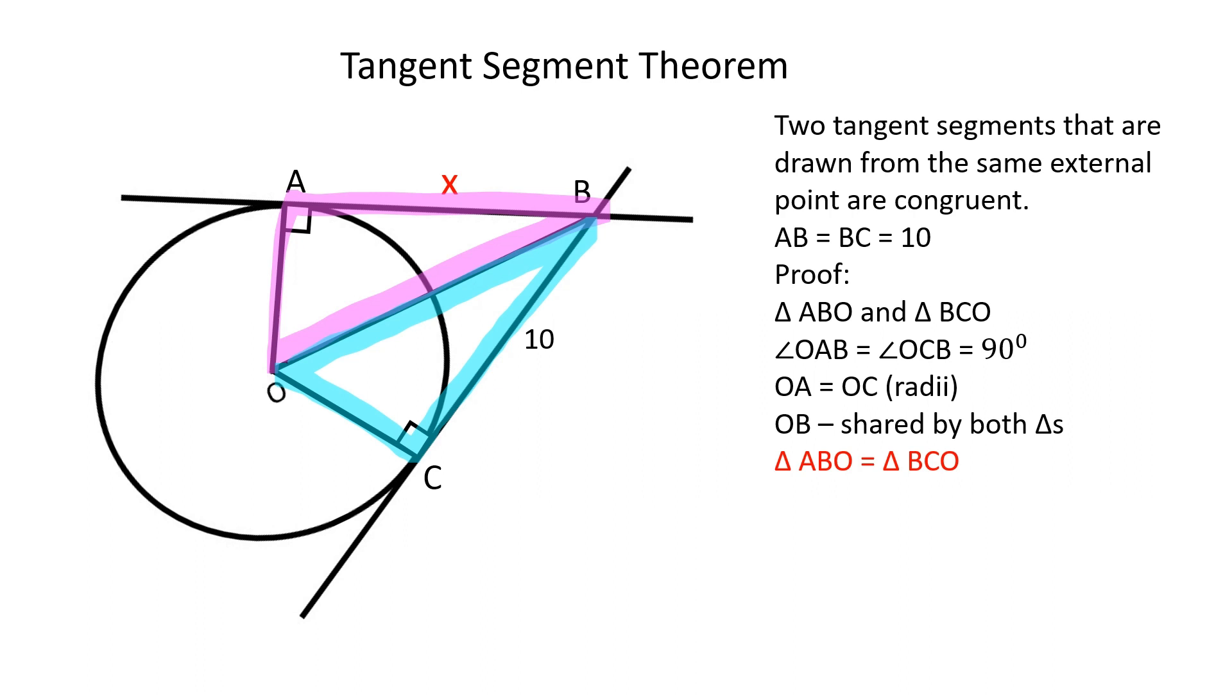Triangles ABO and BCO are congruent because the hypotenuse and the side of one triangle are respectively equal to the hypotenuse and the side of the other triangle. Therefore, AB is equal to BC, which proves our original statement.